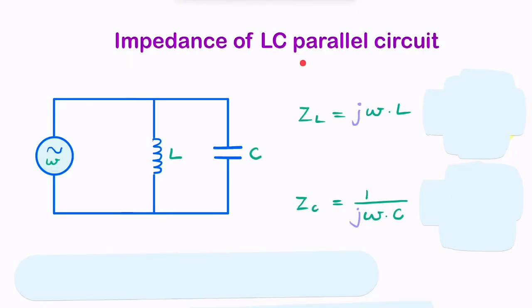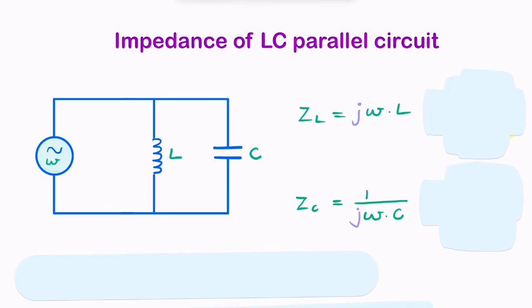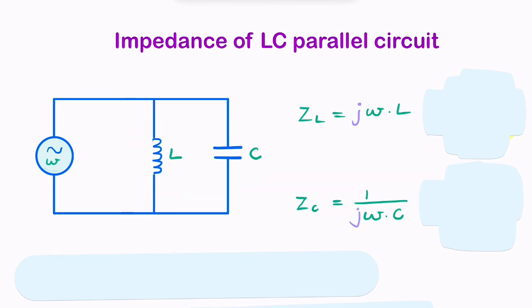If you have a parallel circuit involving an inductor and a capacitor and you have an AC voltage input, it's useful to be able to find the equivalent impedance of these two reactive elements in parallel.